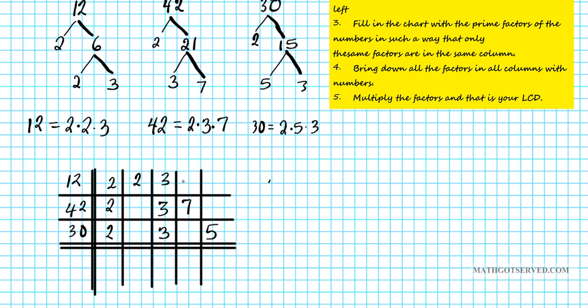Now this chart is extremely powerful. It tells you so many things other than just the LCD that I will be going over in future tutorials. Alright. So let's take a look at what this chart is telling us. This is just a side point. Since there is 2 in all 3 columns, what does that tell me? It tells me that 2 goes into all these 3 numbers. 2 is a common factor. And since there is a 3 in all 3 columns, what does that tell me? It tells me that 3 is also a common factor of all 3 numbers. That's just by the way.